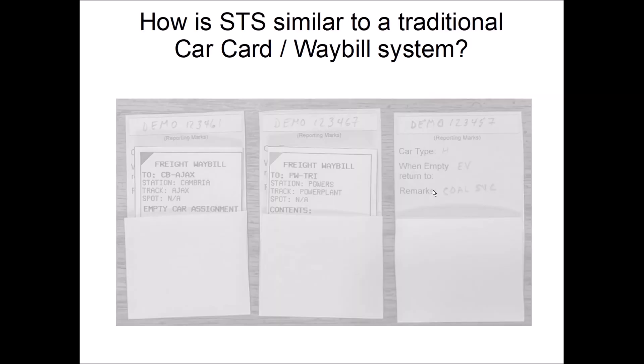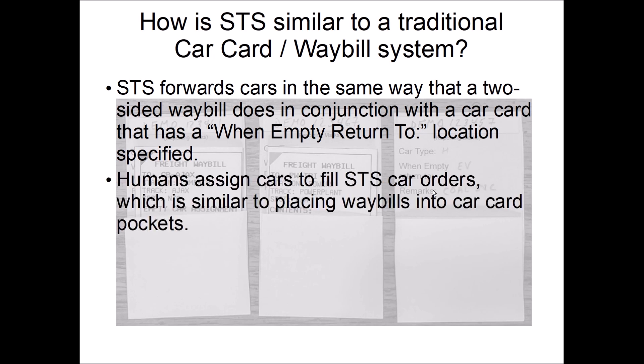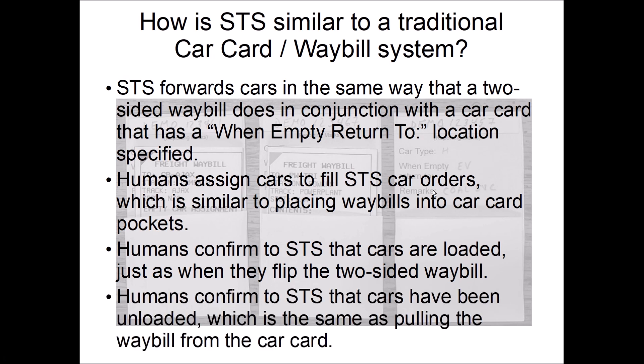How is it similar to a traditional car card waybill system? It works the same way as the two-sided waybill. You have to assign cars to fill car orders — that's the same as putting a waybill into a car card pocket. You have to confirm that the cars are loaded, which is just like flipping the two-sided waybill. And you have to confirm that the cars have been unloaded, which is like pulling the waybill and then sending the car on to its empty-return-to location.